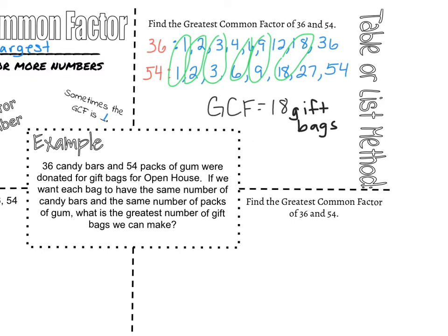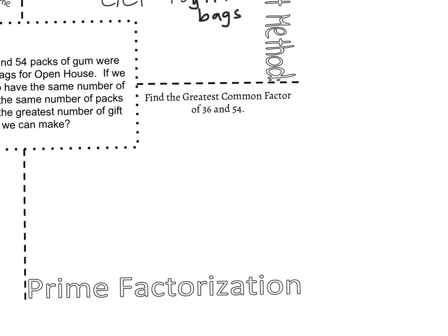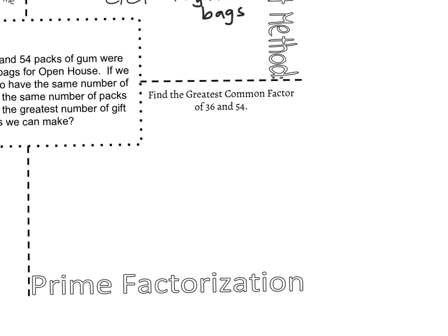The list method works really well for people familiar with their factors, but it can be time consuming and you can miss some factors. So let's look at a different strategy. The second strategy goes back to prime factorization that we did as we started this unit. With this method, I'm going to take each number and break it down into its prime factors.